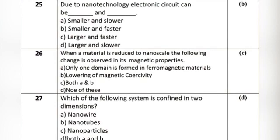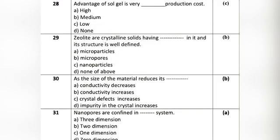Question 3: Which of the following systems is confined in two dimensions? Option A: nanowire. Option B: nanotubes. Option C: nanoparticles. Option D: both A and B. The correct answer is Option D: both A and B.